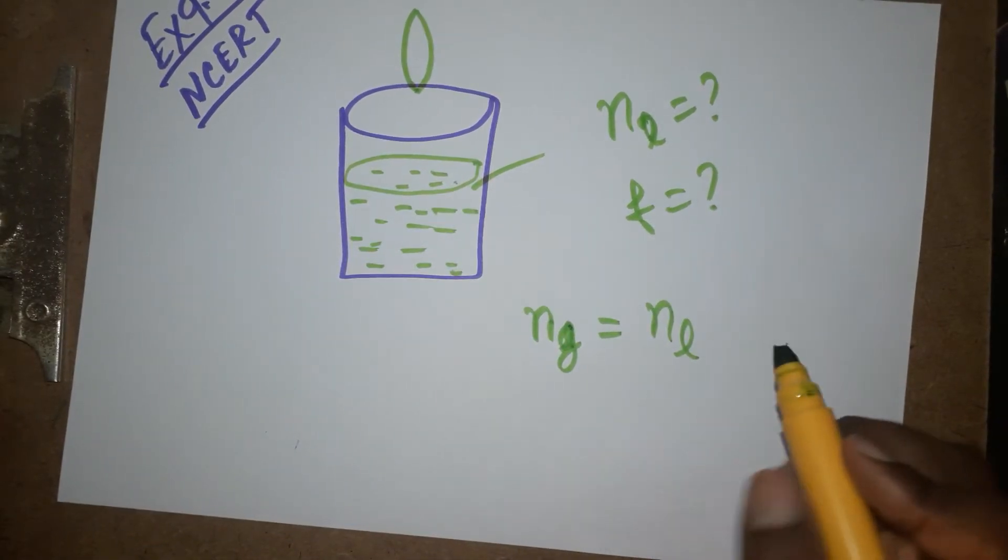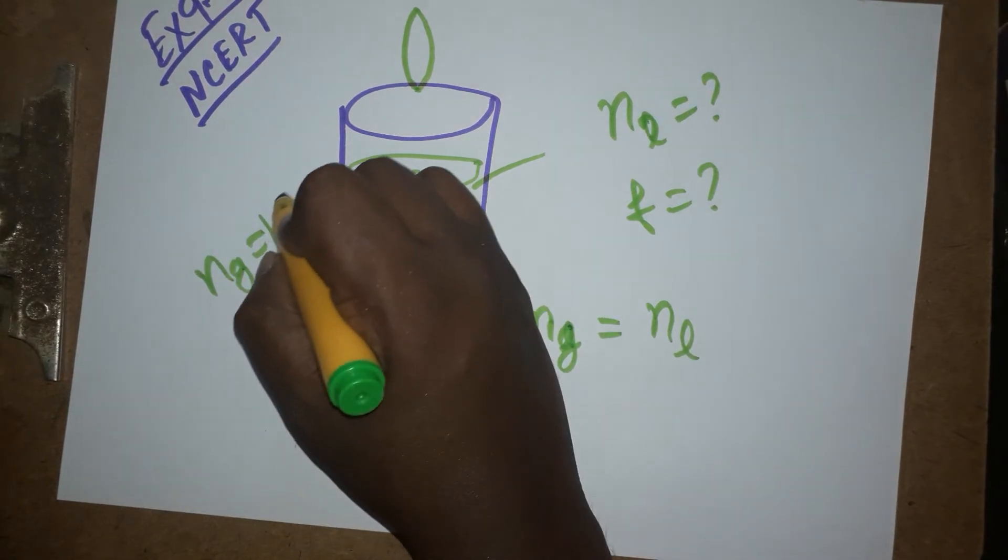In the question, they are given the glass refractive index is 1.57. When it's getting disappeared, it's going to be 1.57.